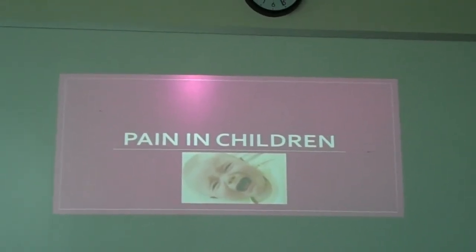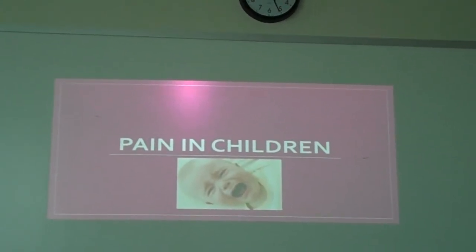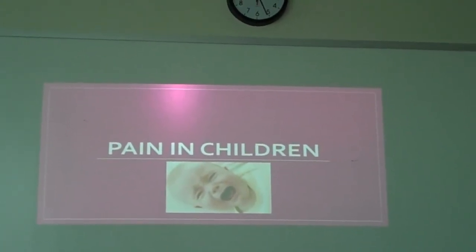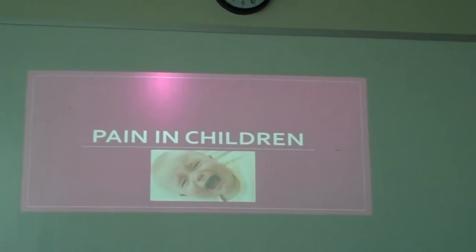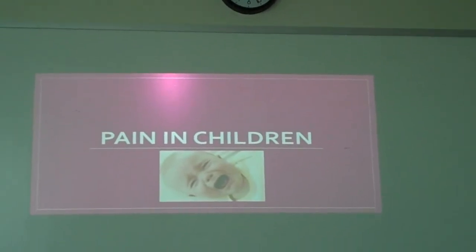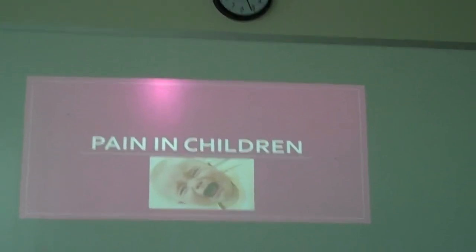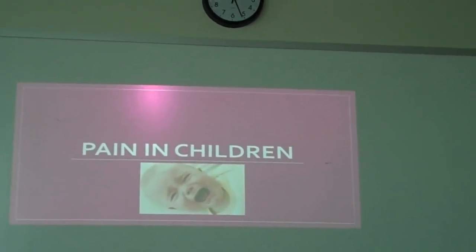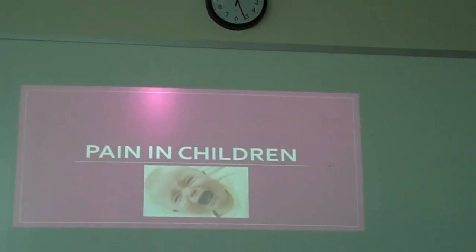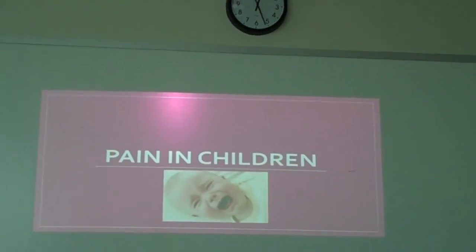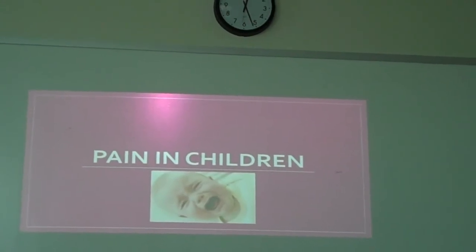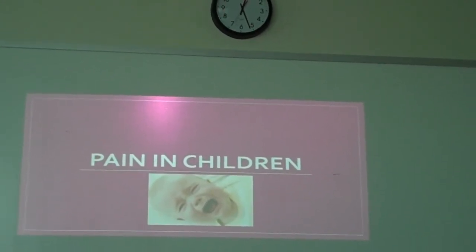Pain scales differ depending on your age group. The FLACC scale is an observational tool for kids two months to seven years of age, where based upon our assessment findings we can give the pain a number. The Wong-Baker scale, or the FACES scale — you'll hear it referred to both ways — is where they can point to a smiley face or a frowny face; it's appropriate for kids greater than three years of age. A visual analog scale is also referred to as the numeric scale, and you can also put FACES in that category of a visual analog scale.